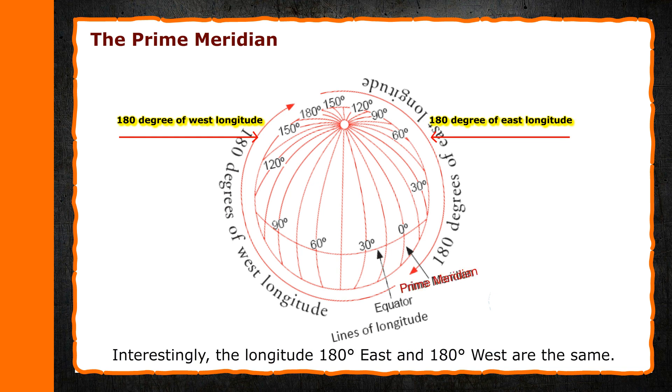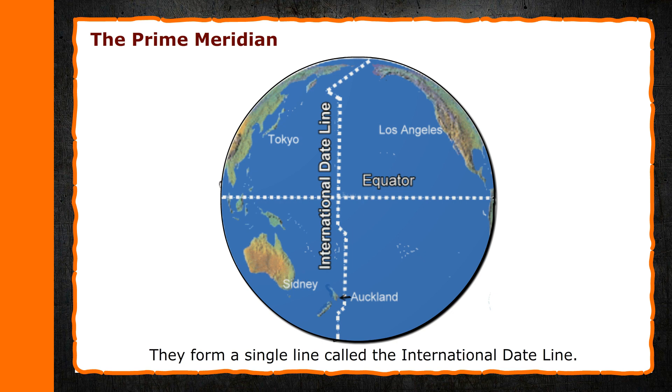Interestingly, the longitude 180 degrees east and 180 degrees west are the same. They form a single line called the International Date Line.